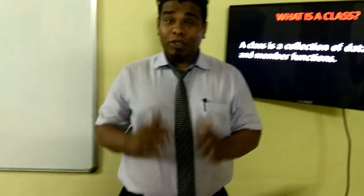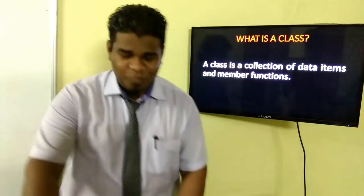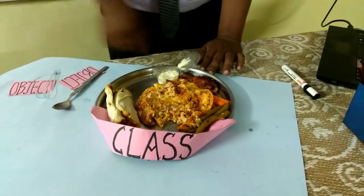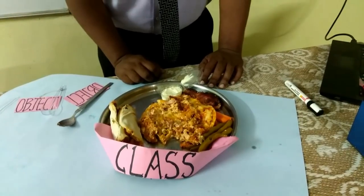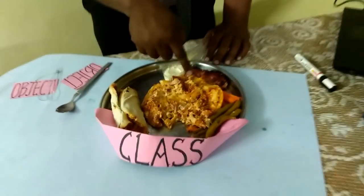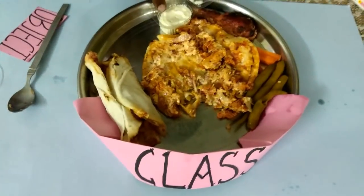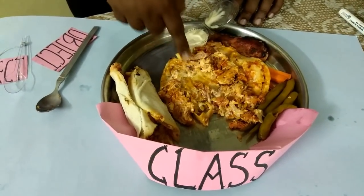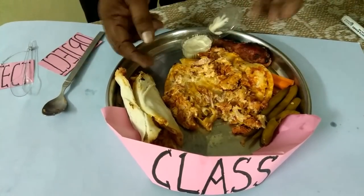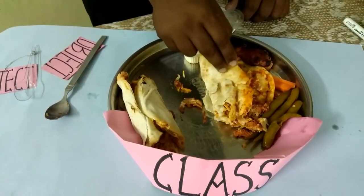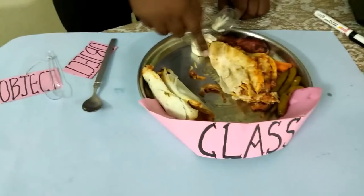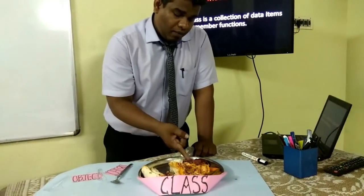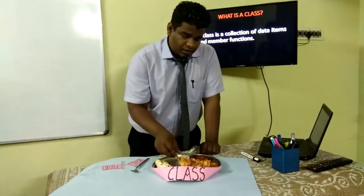Now I will teach you with a real-time example with the shawarma. This plate is my class. Here I have the data members — the variables — like chili, chicken, and mayonnaise. The collection of variables like chicken and mayonnaise together forms the class, that is the plate. Here I have the member function called shawarma — this is a roti — joined together with the chicken piece and mayonnaise.